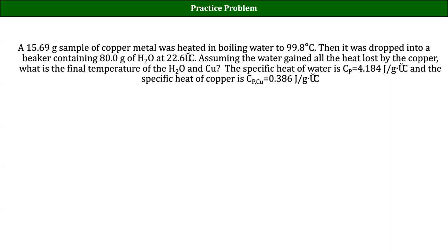If you did all the algebra without this negative sign, you'd get a final temperature of the water lower than the temperature the water started at, or a final temperature higher than the temperature of the copper — neither of those is possible. The key aspect that separates science from math is what I like to call a reasonableness check. We know from everyday experience that the final temperature should be between 22.6 and 99.8 degrees Celsius. If you get an answer outside that range, you did something wrong — bad substitution, missed a negative sign, or missed a conversion somewhere.